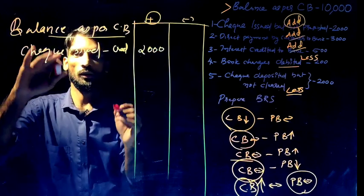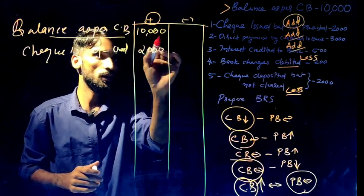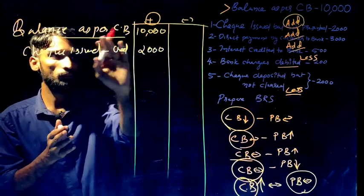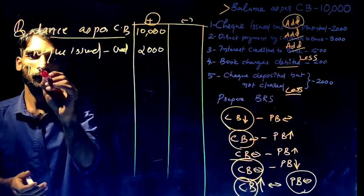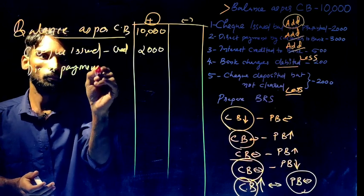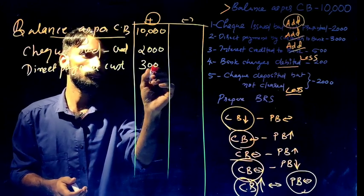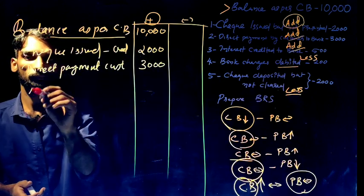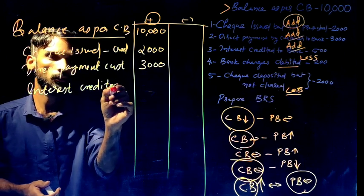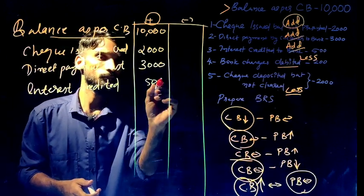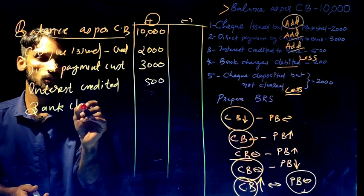Now the calculation: Balance as per Cash Book is $2,000. Add: check deposited but not cleared is a positive item. Direct payment by customer is $3,000 — add. Interest credited to bank is $500 — add. Bank charges debited — this is a negative item, so we minus.